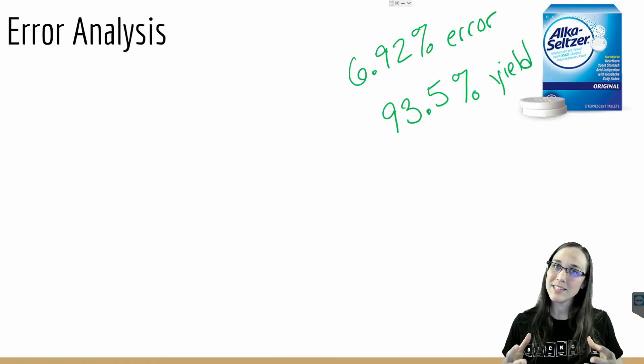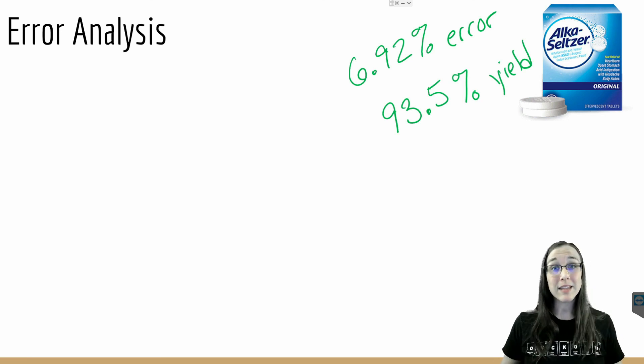In this lab we reviewed the concept of limiting and excess reactants, we performed a lab experiment between baking soda and hydrochloric acid to form salt, NaCl, water, and CO2. We then used the experimental data to calculate our percent yield and our percent error and to discuss what those values would mean in context with error analysis.